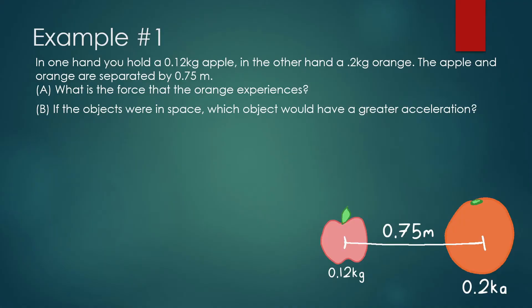Example number one. In one hand you hold a 0.12 kilogram apple. In the other hand you hold a 0.2 kilogram orange. The apple and orange are separated by 0.75 meters. What is the force that the orange experiences? This diagram shows that we always measure separation from the center of mass of both objects.